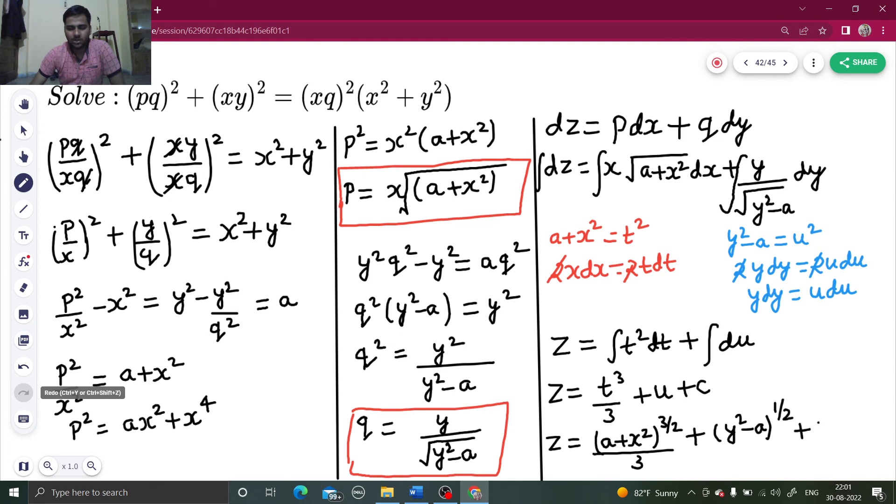So Z equals—what is T? T is A plus X squared to the power half, that cubed, so A plus X squared to the 3/2 divided by 3, plus U is Y squared minus A to the power half, plus a constant C. This is going to be your answer.